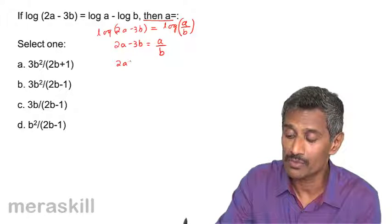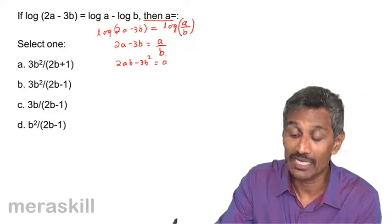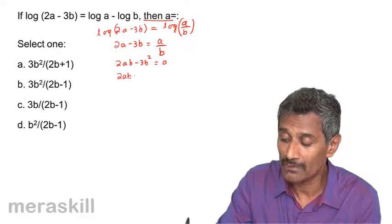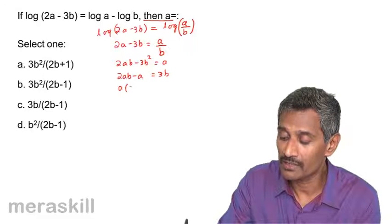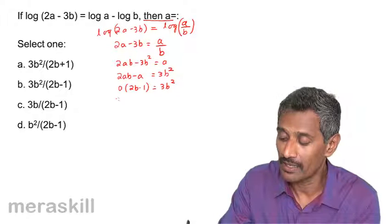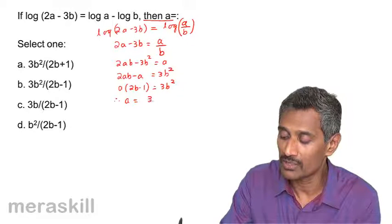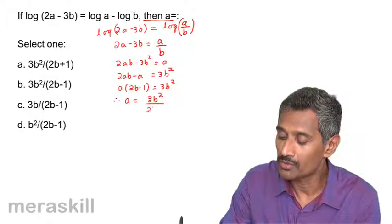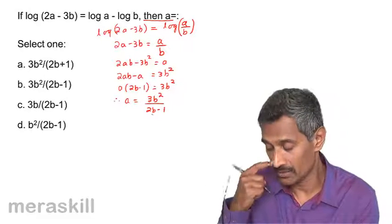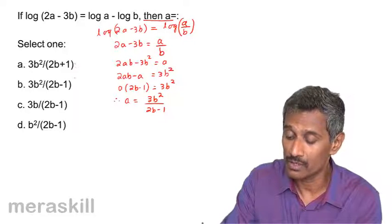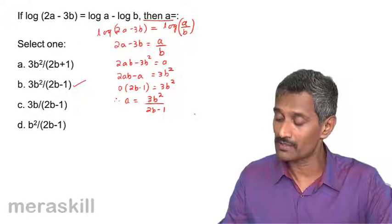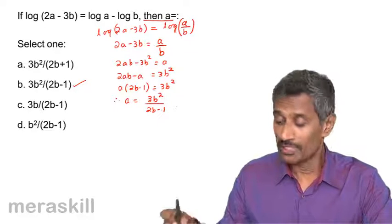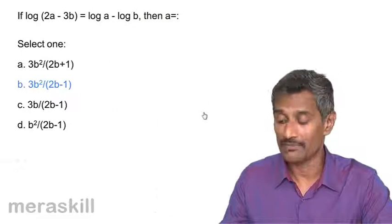Multiplying both sides by b: 2ab minus 3b² = a. Collecting all a terms: 2ab minus a = 3b². Factoring out a: a(2b minus 1) = 3b². Therefore a = 3b² / (2b minus 1). Among the options, 3b² / (2b minus 1) is the correct answer.